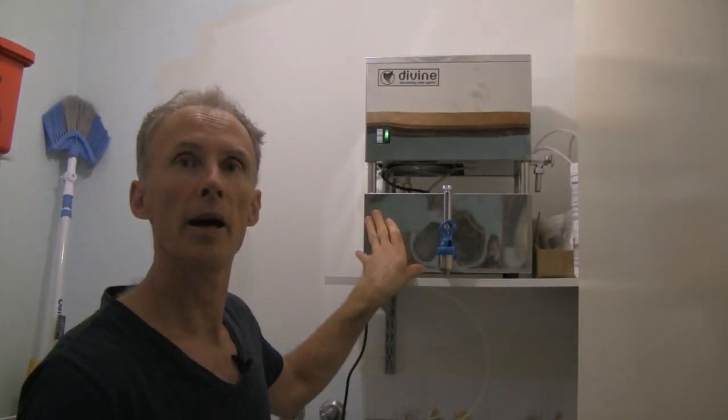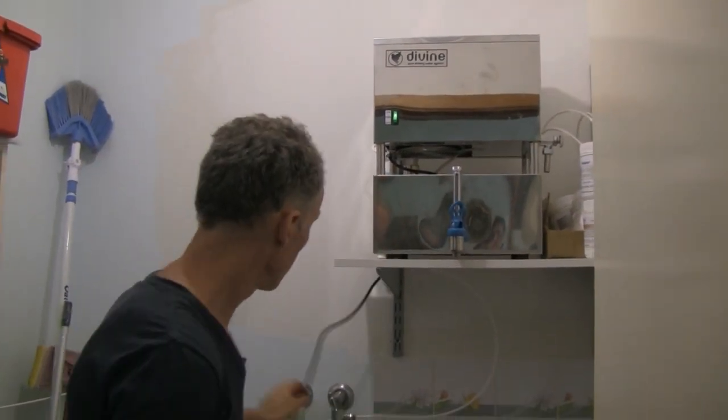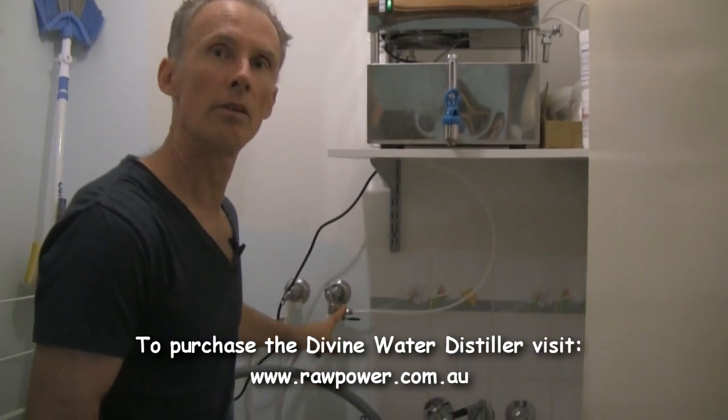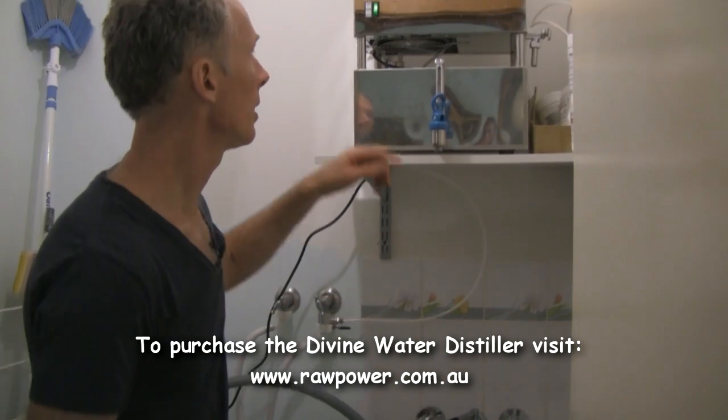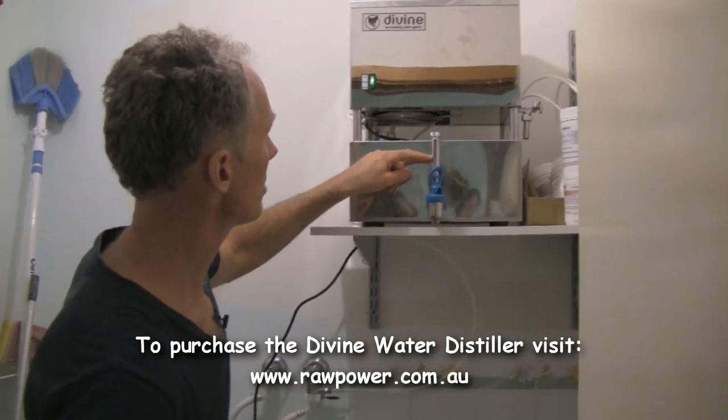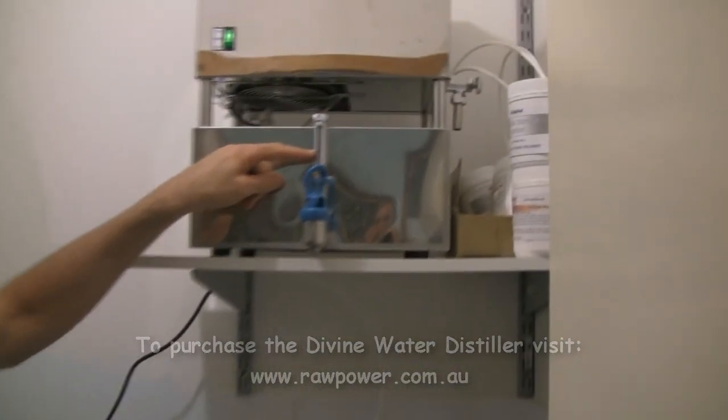So this is a 16 liter automatic distiller. As you can see, it's just plugged in next to the washing machine here, so it's permanently got a water supply. You'll see it's got a gauge here, so right now this is about three quarters full.